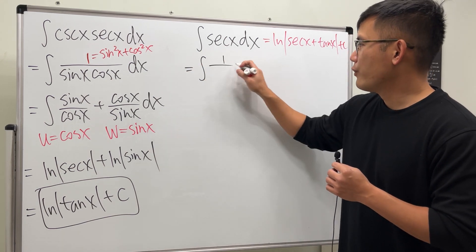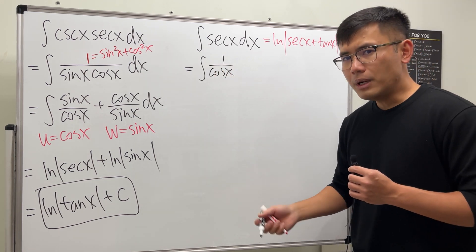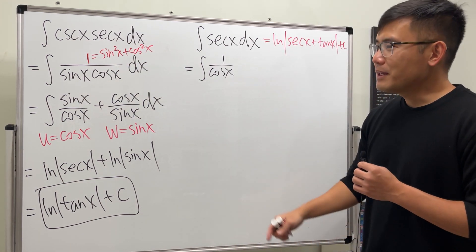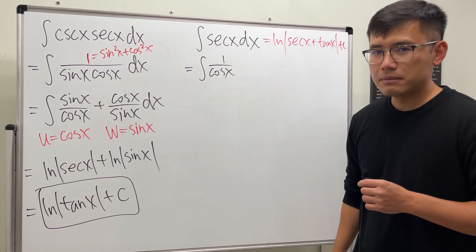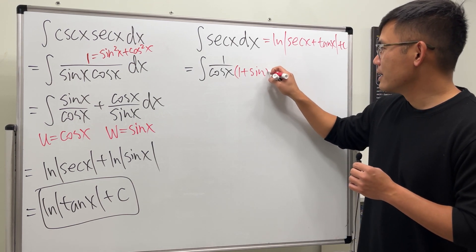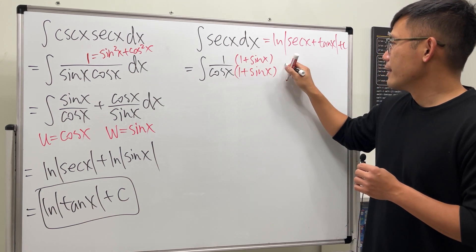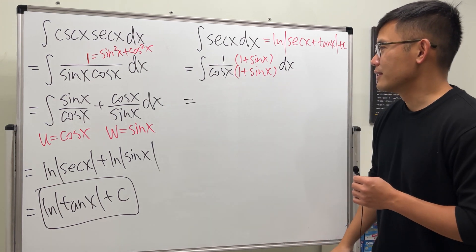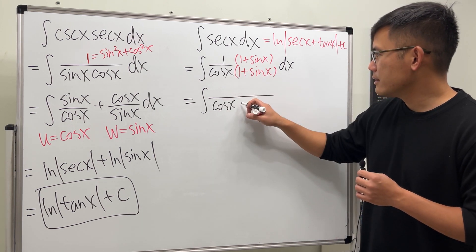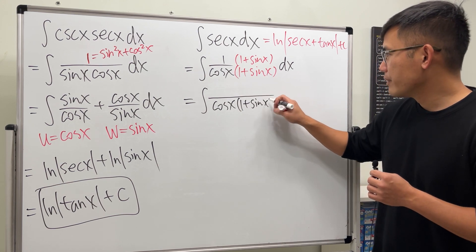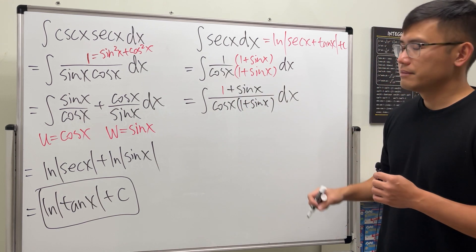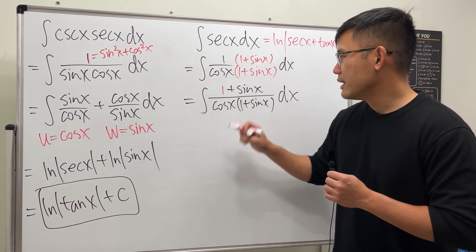Check this out — I'm still going to write this as one over cosine x, similar to what we did over there. You might wonder if I'm going to write one as sine squared x plus cosine squared x — not yet. I'm going to multiply the top and bottom by something different: one plus sine x. So on the bottom we have cosine x times one plus sine x, and on the top we have one plus sine x.